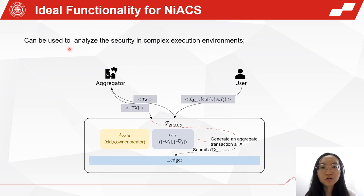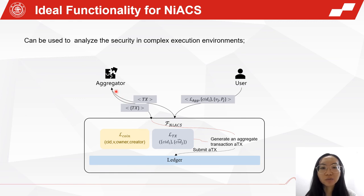We also define the ideal functionality for NIACS. Unlike the original ledger, the ideal functionality for NIACS submits the aggregate transaction into the ledger, not the individual transactions. For a transaction, the party not involved in it can only obtain the coin identifications, which hides the coin values and relevant parties.